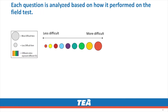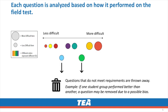After field testing, we have different questions that represent varying difficulty levels and SEs, or student expectations. Each question is analyzed based on how it performed on the field test. Questions that do not meet requirements are thrown away. For example, if one student group performed much better than another on a particular question, that question may be removed due to a possible bias.